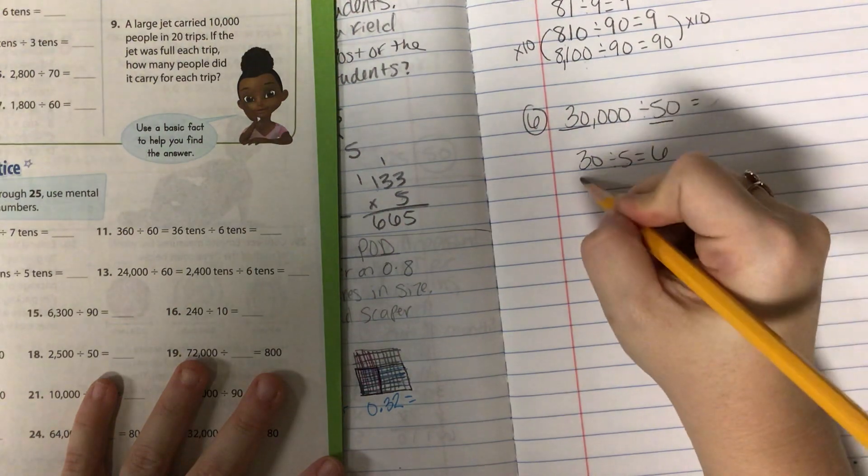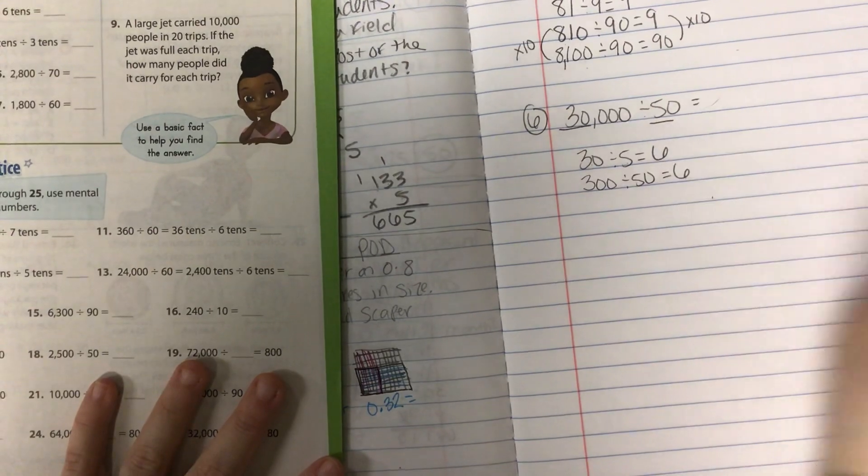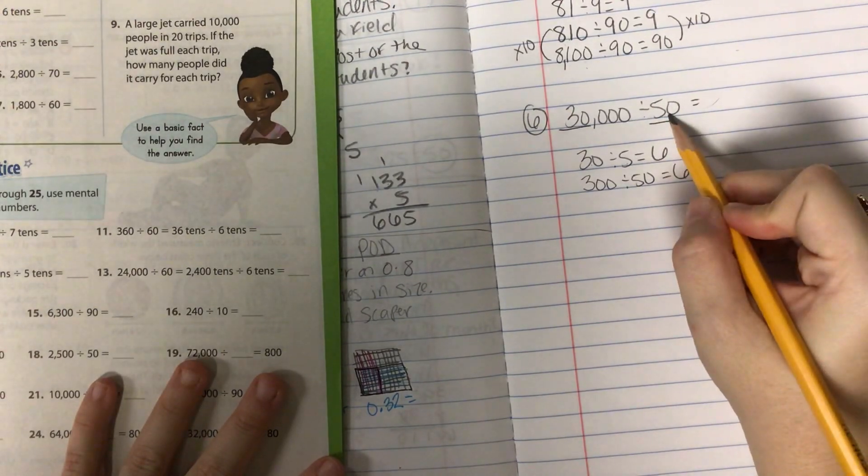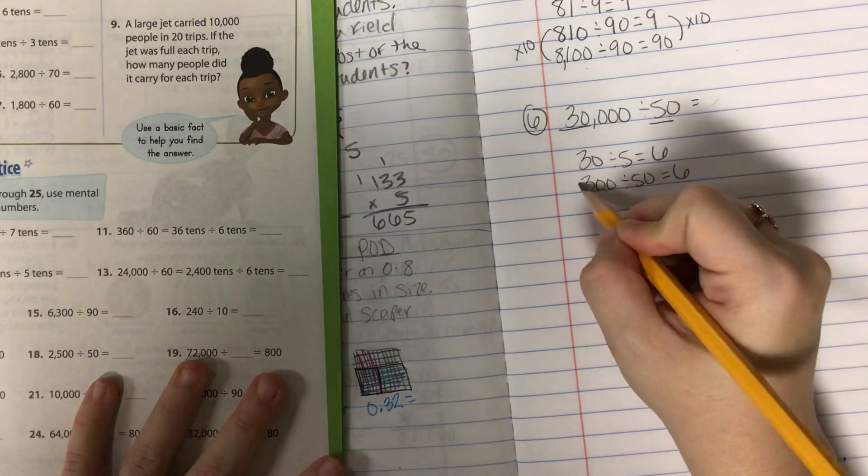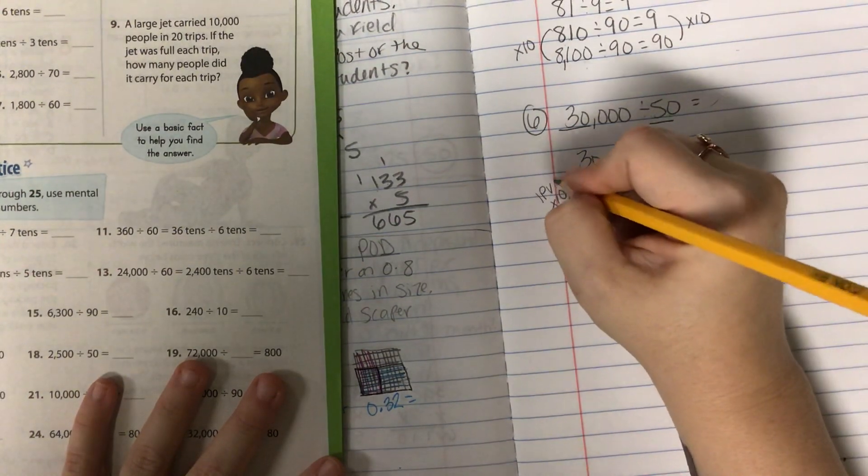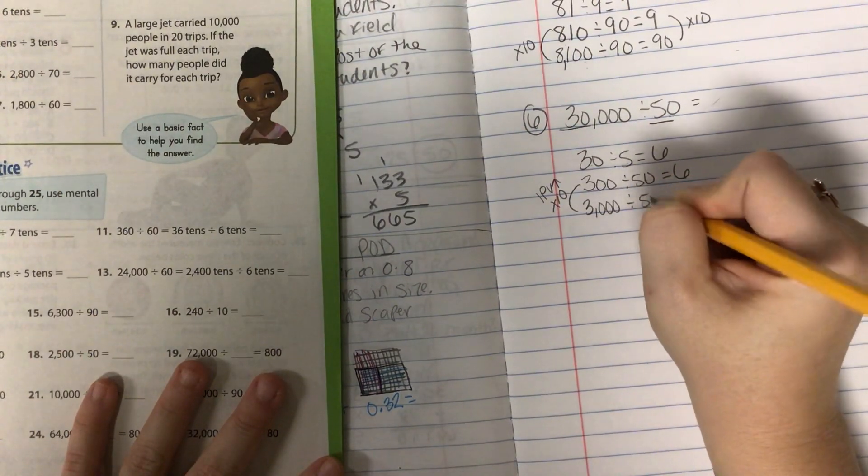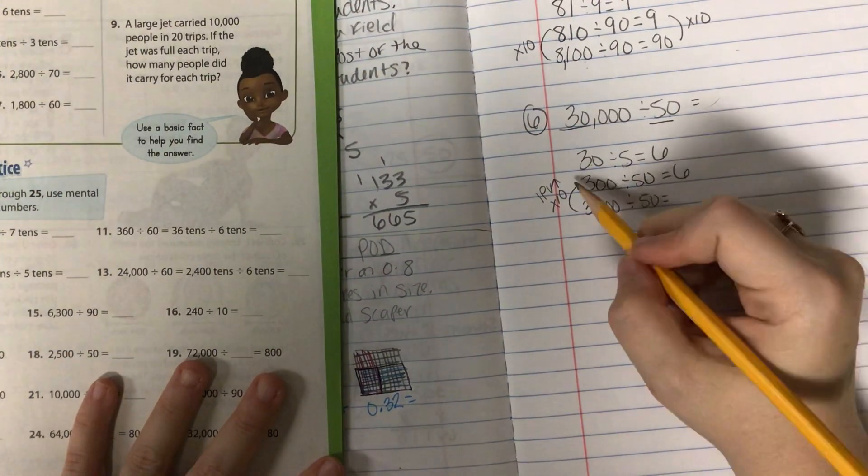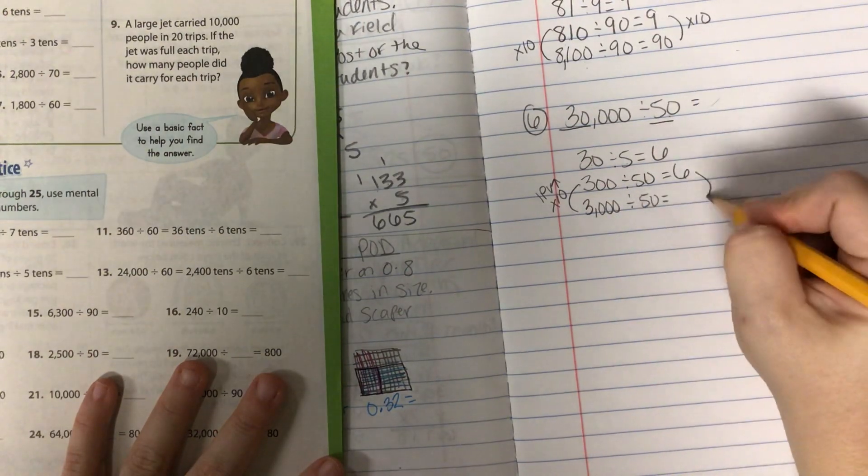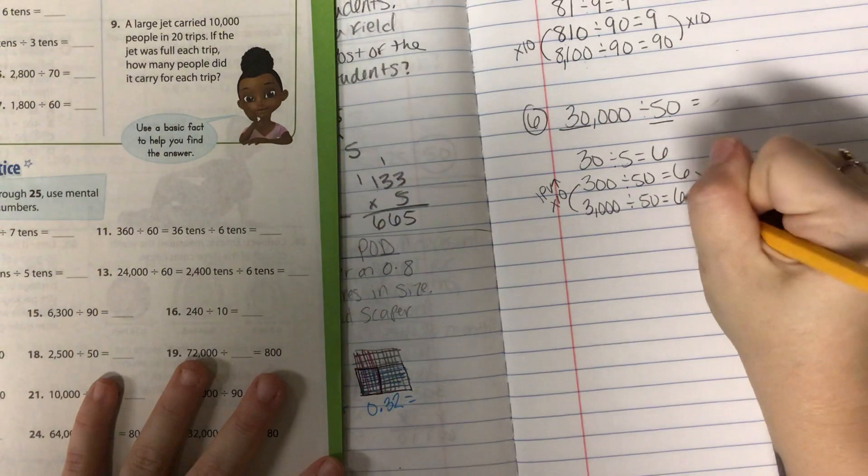We're going to times 10 on both of them so that we get the same answer. And now we're at our full 50. So this one's not going to stay the same. Now we're going to multiply by 10 or go up one place value, which gives us 3,000. But I'm going to keep this one the same. So if I went up 10 on one number, I go up by 10 or one place value on the next number, which makes it 60.